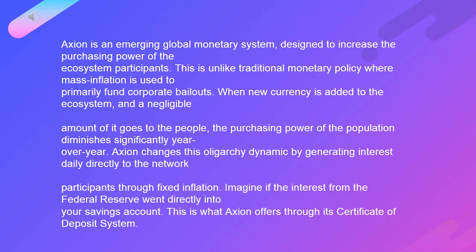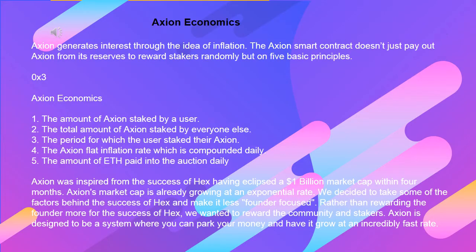Imagine if the interest from the Federal Reserve went directly into your savings account. This is what Axion offers through its Certificate of Deposit System — Axion Economics. Axion generates interest through the idea of inflation. The Axion smart contract doesn't just pay out Axion from its reserves to reward stakers randomly, but on 5 basic principles.